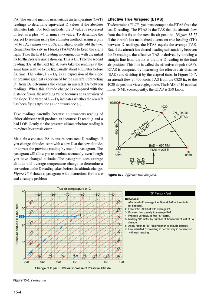But if the aircraft has altered heading substantially between the D readings, the effective TAS is derived by drawing a straight line from the fix at the first D reading to the final air position. This line is called the effective airpath (EAP). ETAS is computed by measuring the effective air distance (EAD) and dividing it by the elapsed time. In Figure 15-7, an aircraft flew at 400 knots TAS from the 0820 fix to the 1020 air position via a dogleg route. The EAD is 516 nautical miles. Consequently, the ETAS is 258 knots.